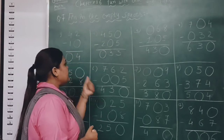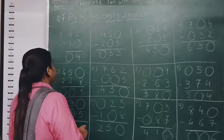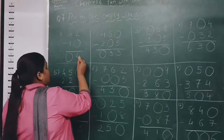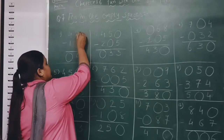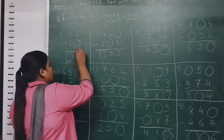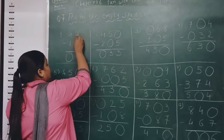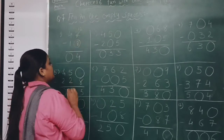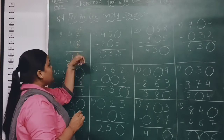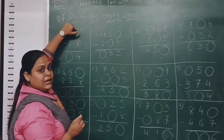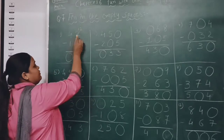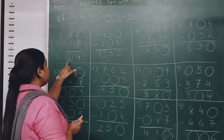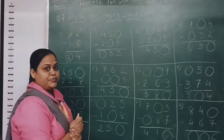Equation number 7: fill in the empty space. A circle is given in the empty space and we have to find the numbers. First one: 42 minus blank equals 4. From 2, getting 4 is not possible, so we borrow — here it will be 12. 12 minus 8 gives 4, so the missing digit is 8. Check: 8 plus 4 is 12, correct. We took one borrow so here will be 3, and 3 minus 1 is 2. So we got 8 and 2 — the answer is 28.